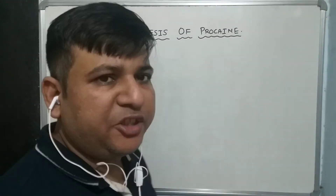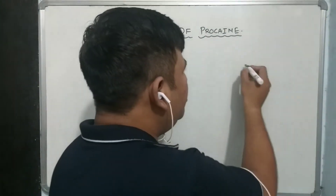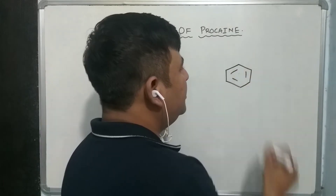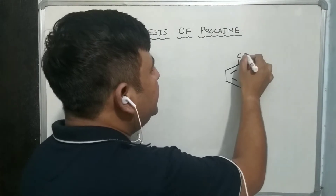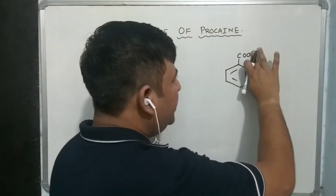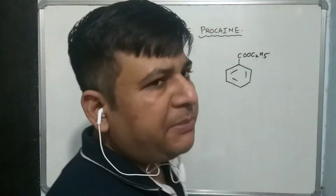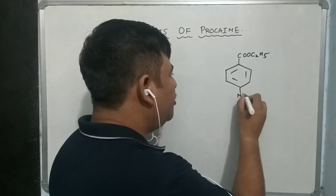First of all I will discuss the structure of procaine. The procaine structure is related to benzocaine. Benzene with COOH is benzoic acid. If we put COOC2H5 it becomes ethyl benzoate, and if you put NH2 here, this becomes benzocaine.